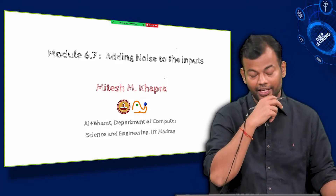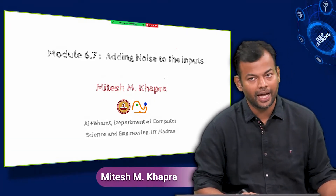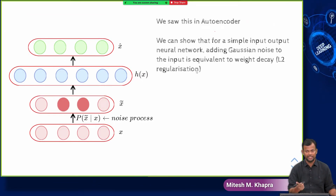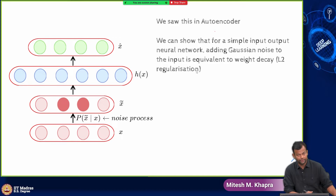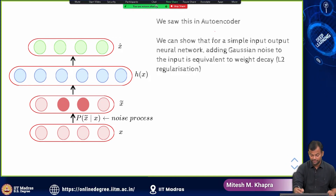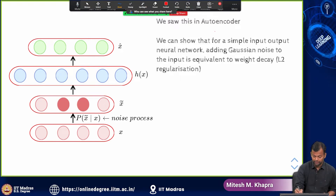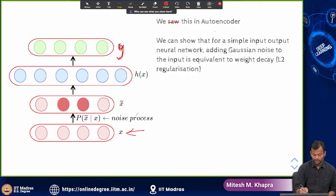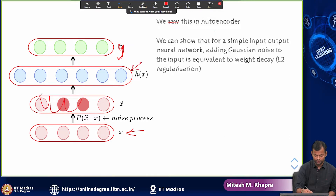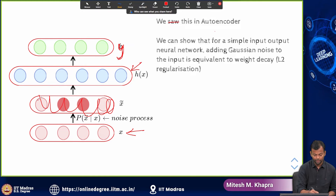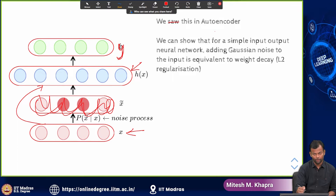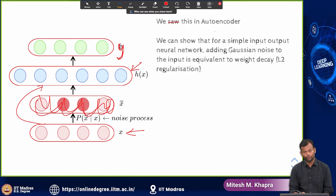The next regularization technique we are going to see is about adding noise to the inputs. Earlier I used to first teach autoencoders and then do this lecture, but now I have changed that. We will see this in the autoencoder context later, but for now assume you have a certain input and a one-layer network feeding directly into the output. This is what your normal neural network would look like.